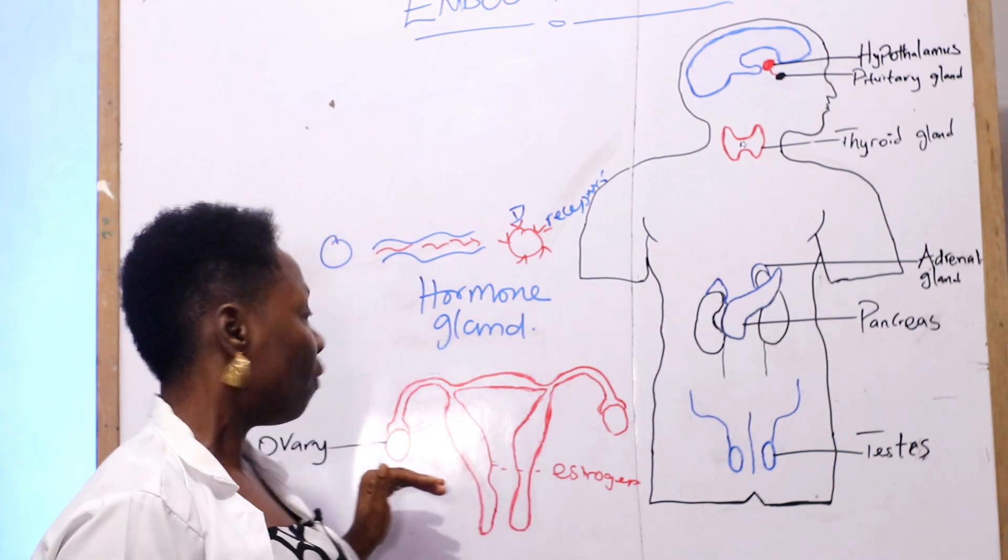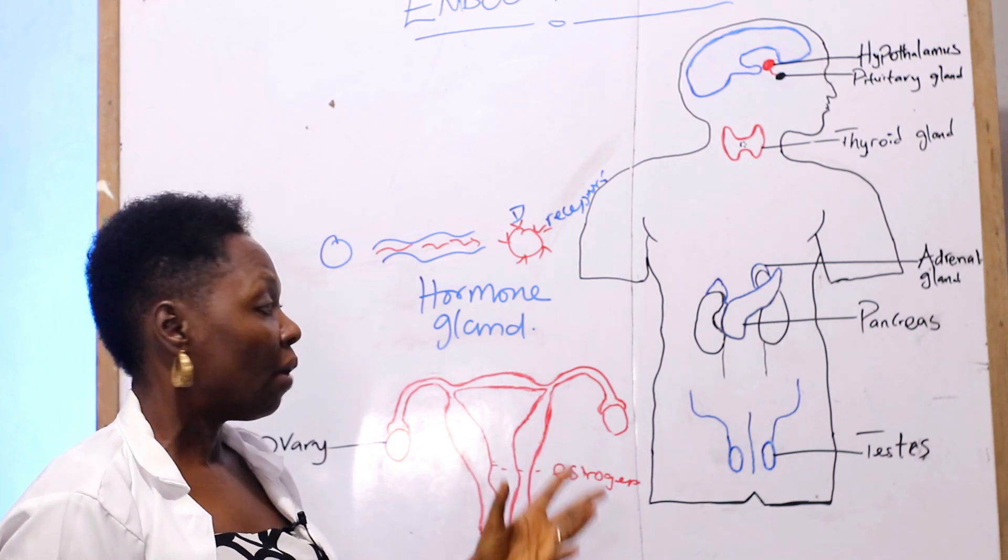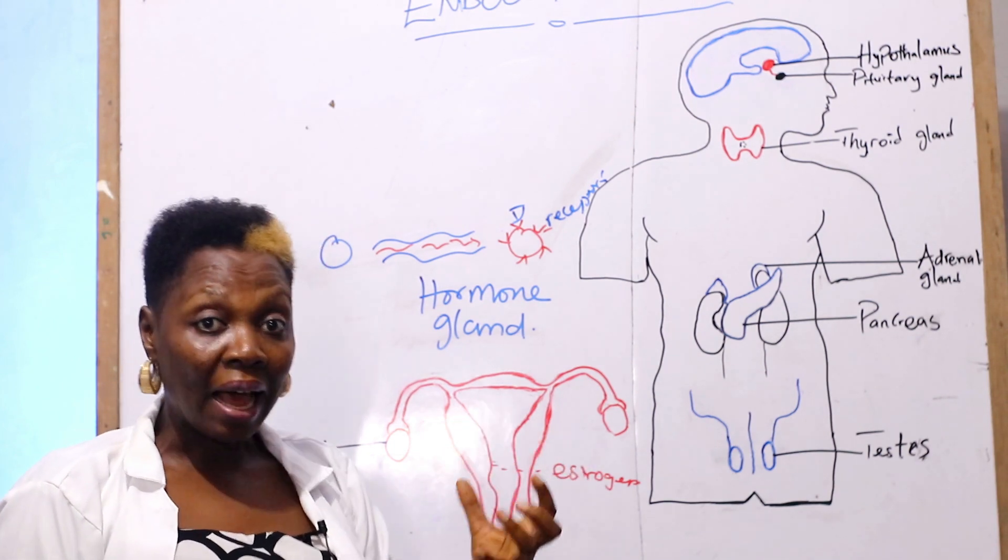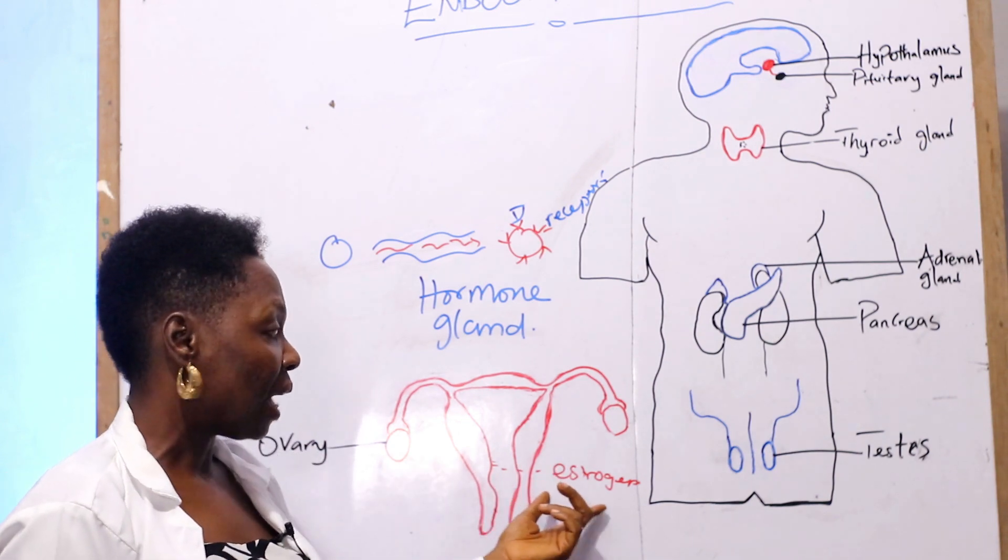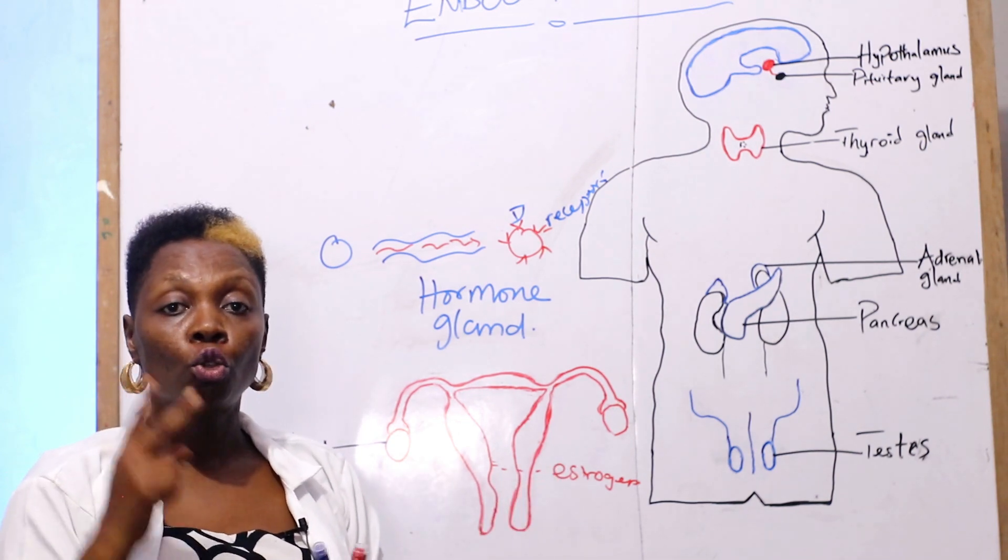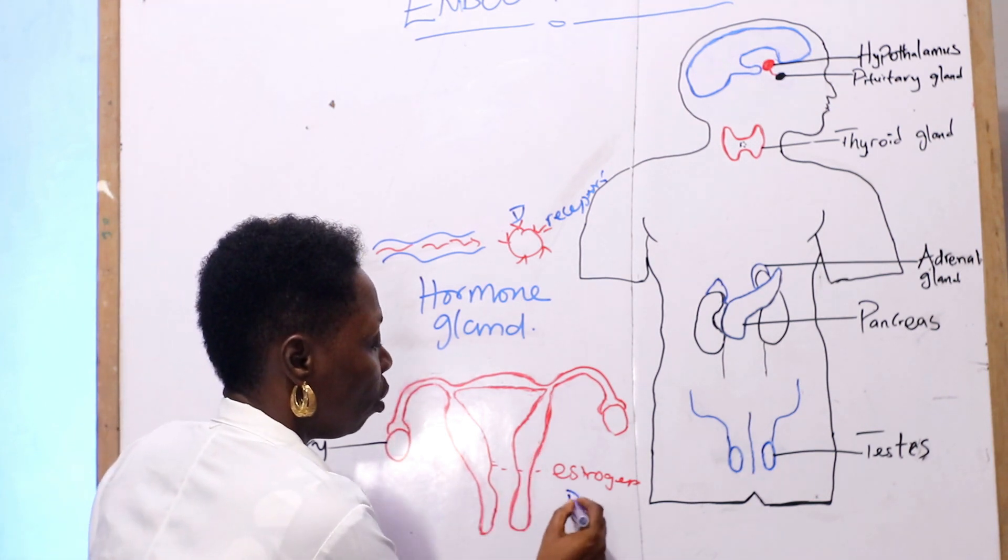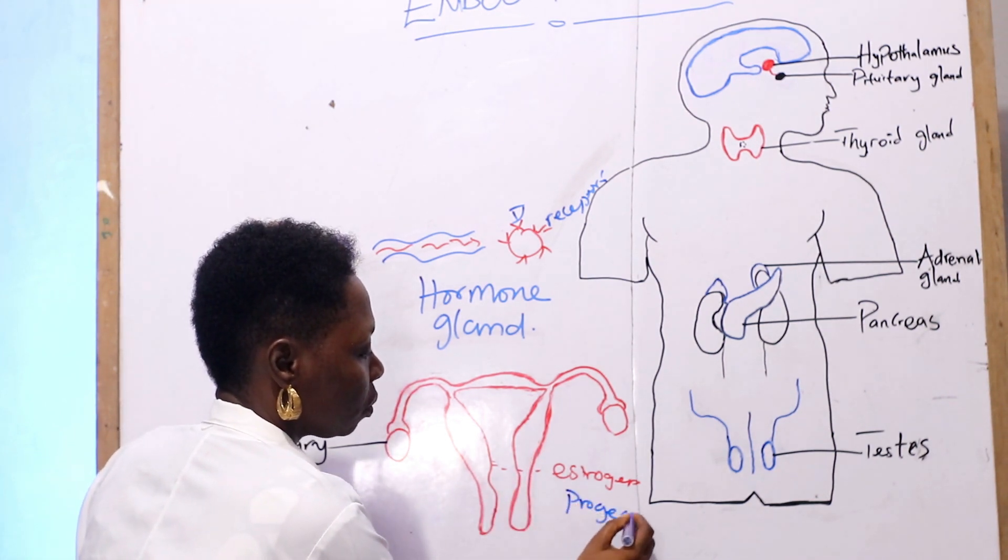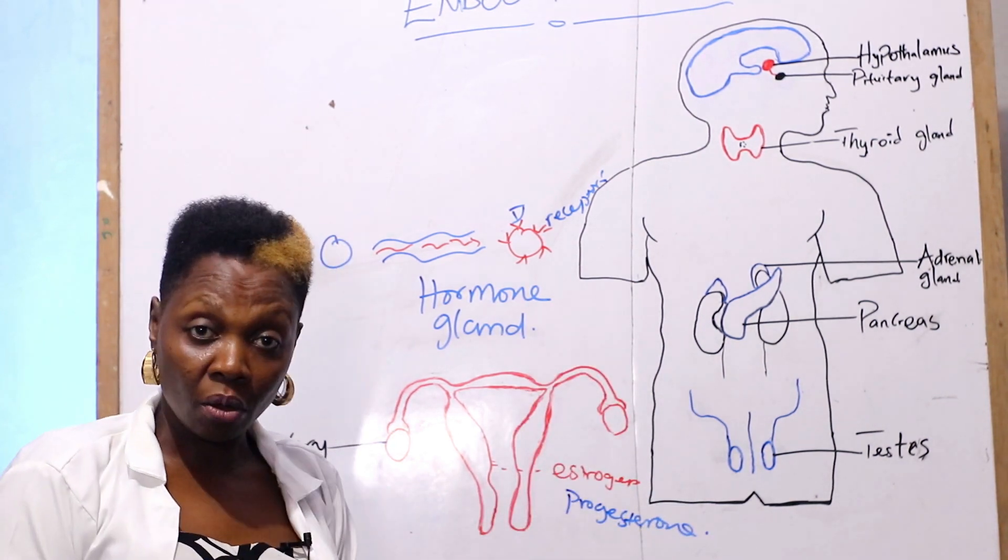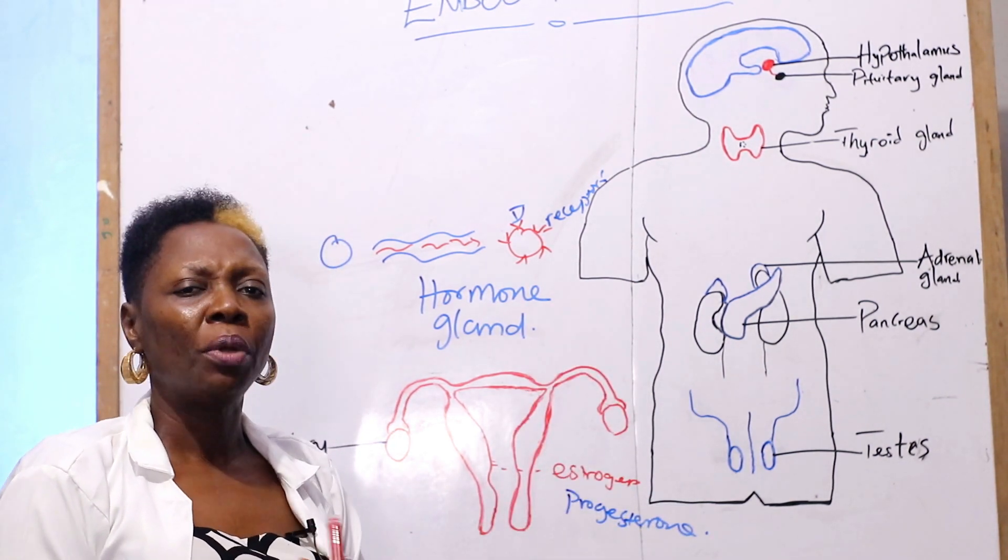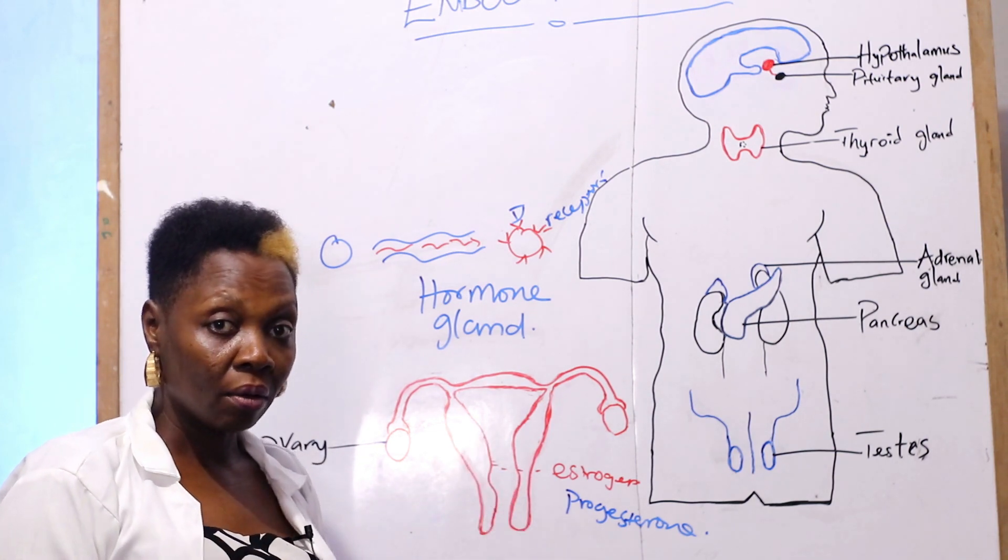Now, we move over to the ovaries. These are the ovaries. The ovaries can act as a gland and a reproductive organ. As a gland, they synthesize and secrete two hormones: estrogen and progesterone. We'll be looking at this in detail in subsequent classes, where we'll be looking at the menstrual cycle. We'll also look at the ovarian cycle.